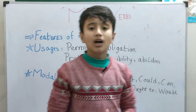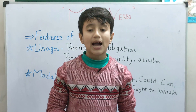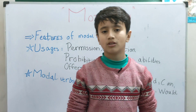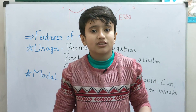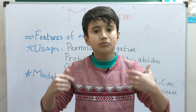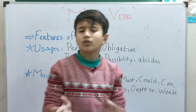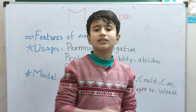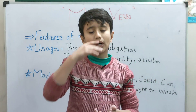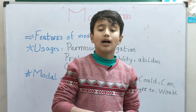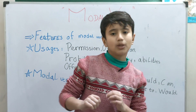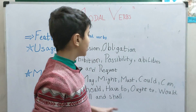The next use is abilities. For example: 'I can speak English,' 'I can swim,' 'I can run fast,' 'I can talk,' 'I can make stuff' — like digital creations, etc. You use 'can' to show your abilities and the things that you are able to do. Note that 'able to' is not actually a modal verb — these are different things.